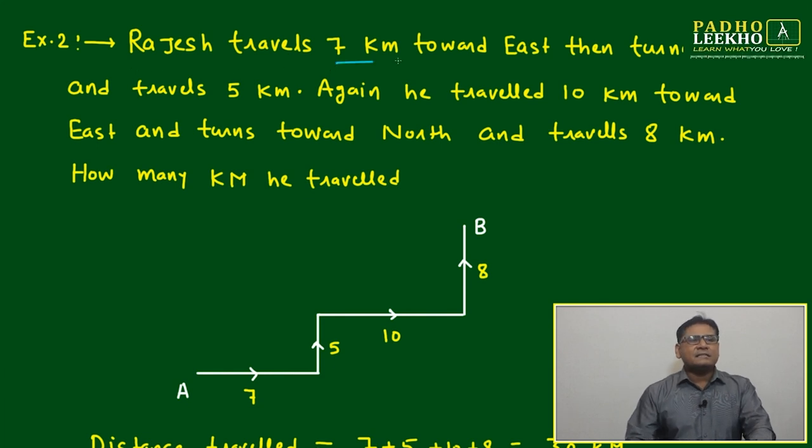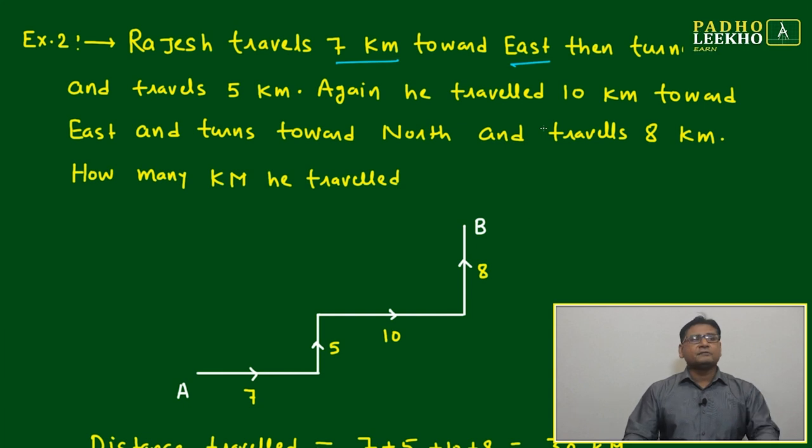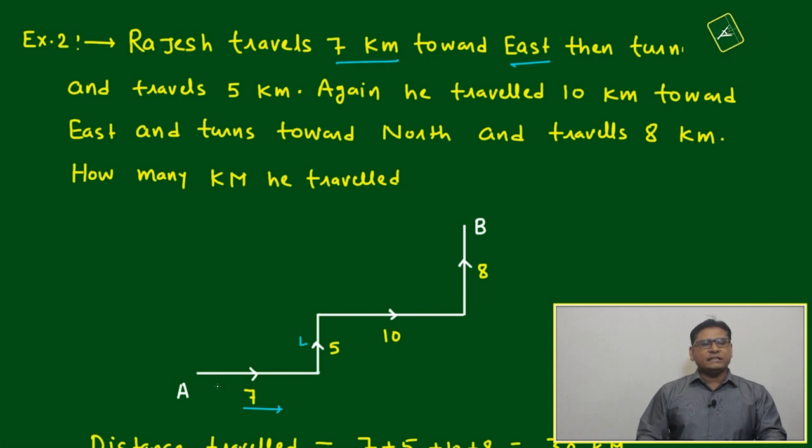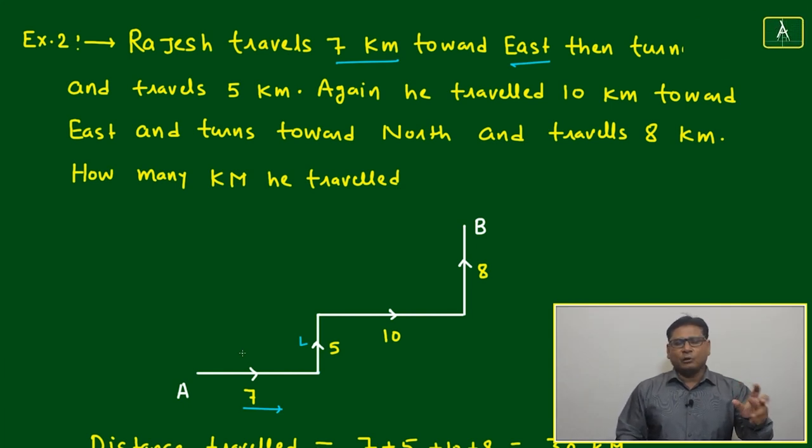Rajesh travels 7 km toward east then turned left and travels 5 km. Rajesh this is your east. Once he will reach, your left will be this, then left he has taken 5 km. Just check the level: this is 7 km, this is 5 km. The line of 5 km is smaller than 7.